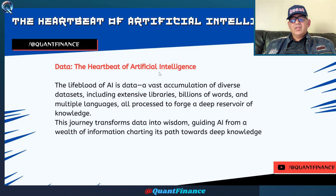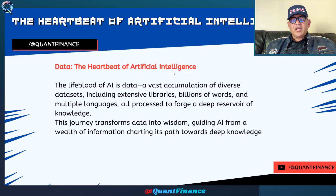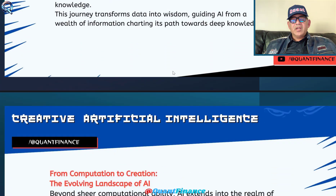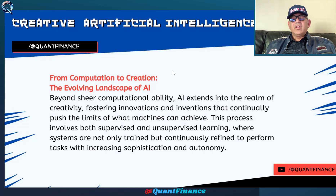These machines, systems, and chatbots are trained — they learned from a vast pool of data. That is why we say data is the heartbeat of artificial intelligence. The AI systems are on a journey to transform data into wisdom, guiding AI from a wealth of information to a path of deep knowledge. There is deep learning happening now, and this deep learning gives them power — moving beyond computational power into creative power. This is the evolving landscape of AI.